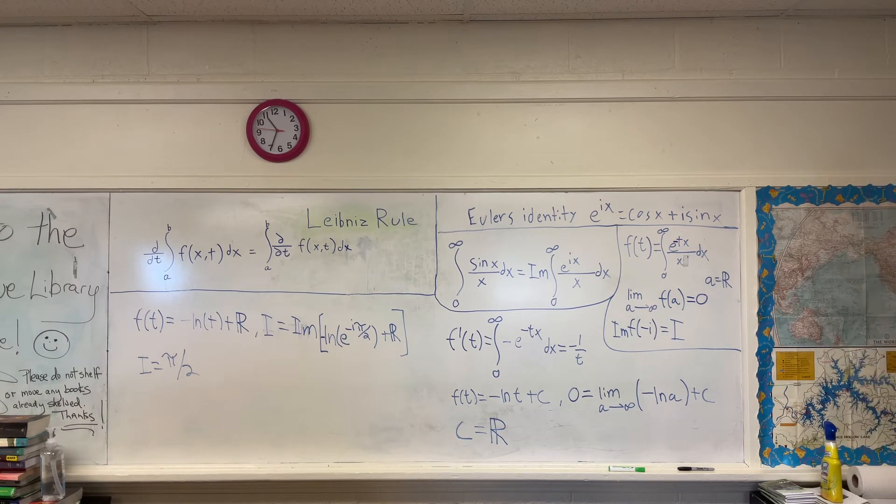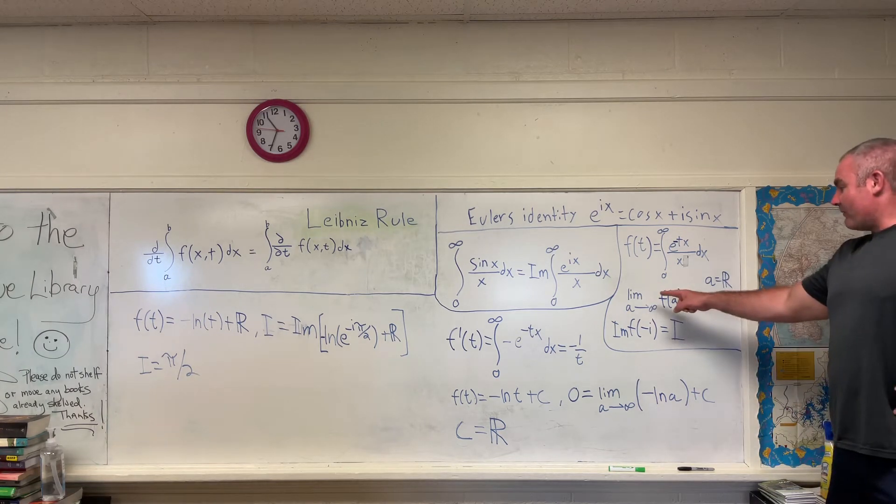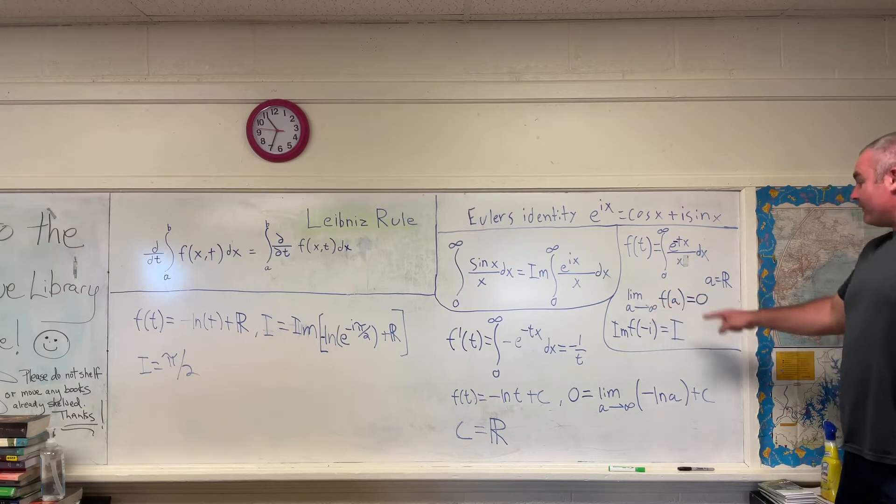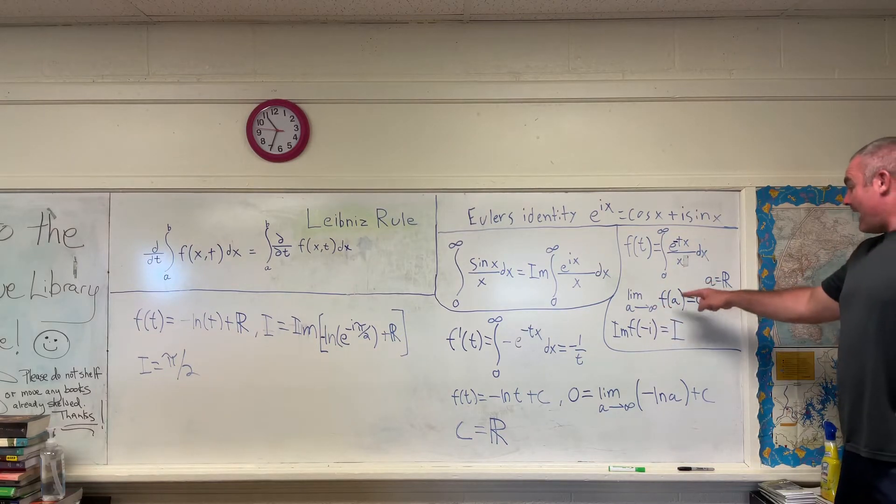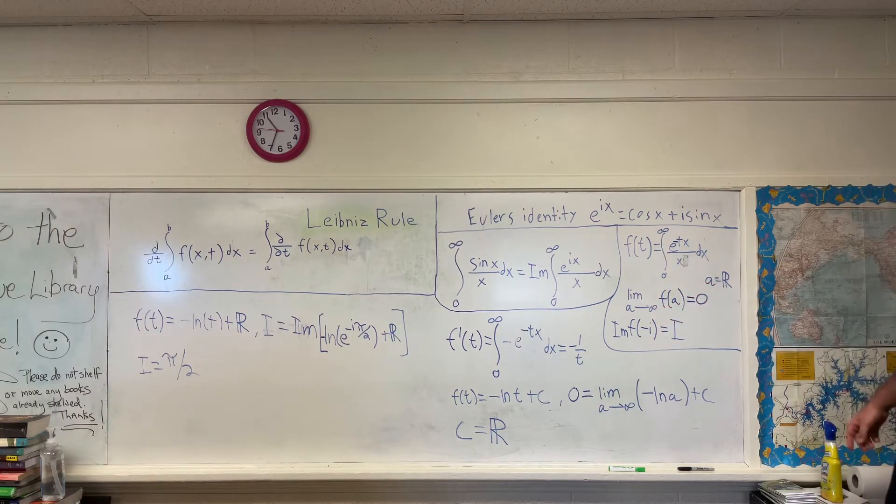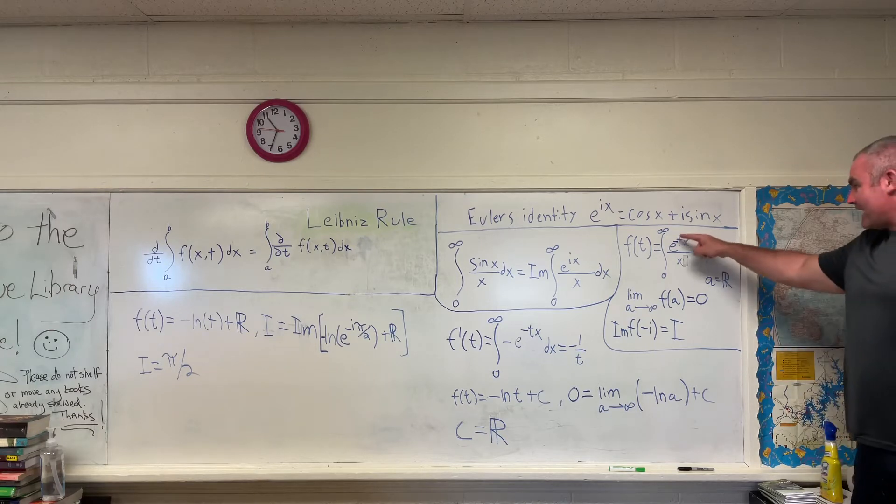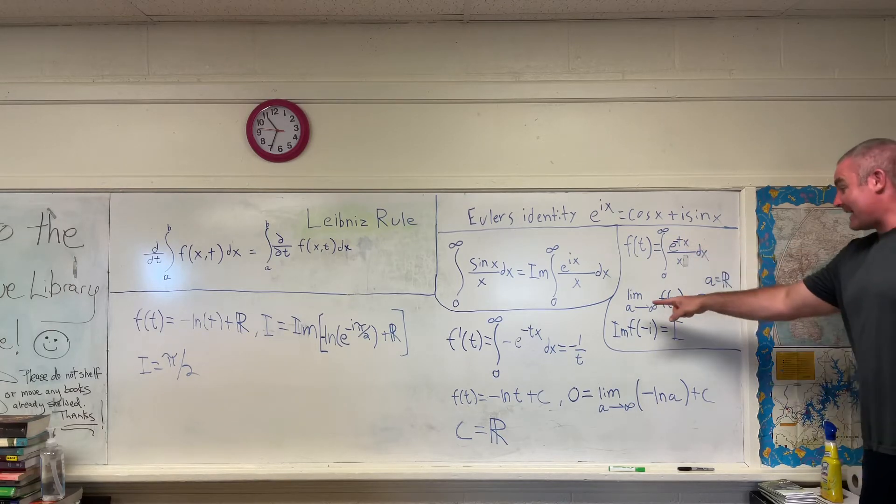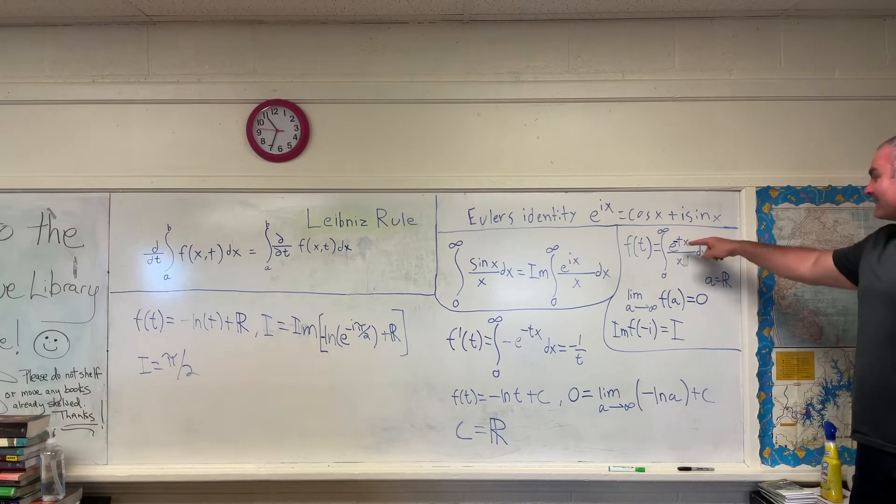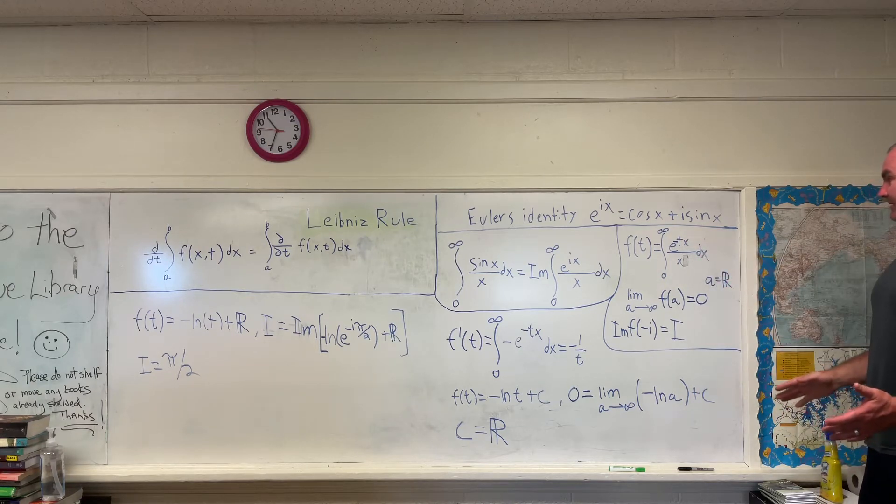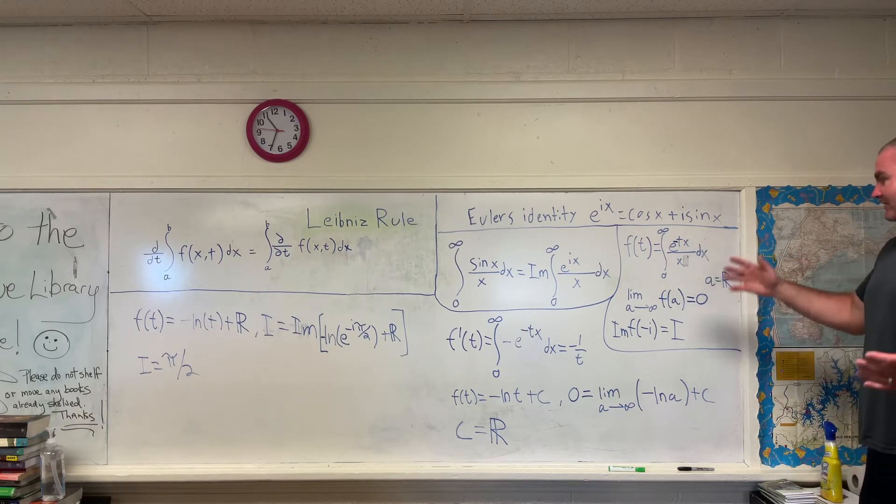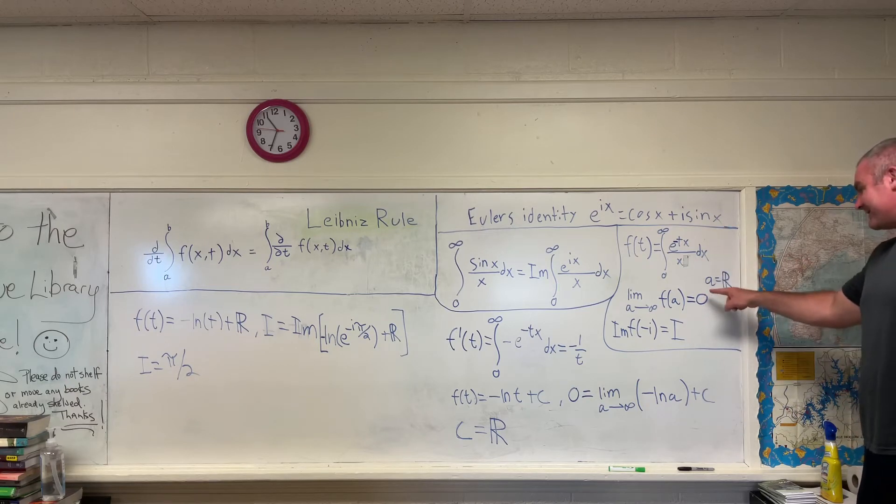And then we're going to note that if you take the limit as some value a approaches infinity of f of a, you're going to get 0. What I mean by that is if you put an a here instead of a t and then you let a approach infinity, you're going to get e to the negative infinity, which is 0 over x is 0. So the whole thing will evaluate to 0.